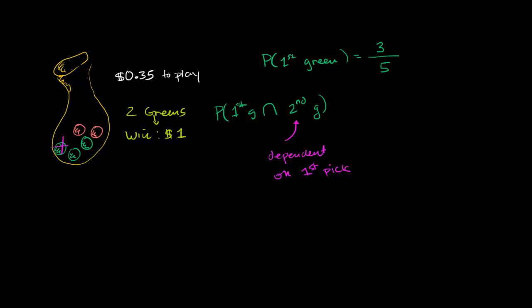So the way that we would refer to this, the probability of both of these happening, yes, it's definitely equal to the probability of the first green times, now this is kind of the new idea, the probability of the second green given, this little line right over here, just this straight up vertical line, just means given. This means given that the first was green.